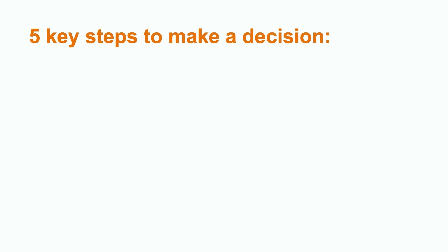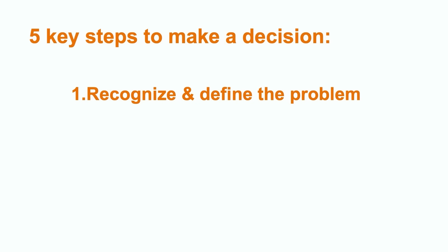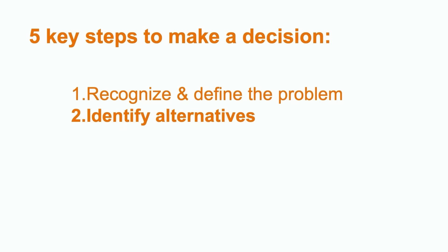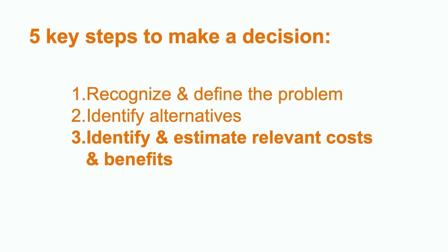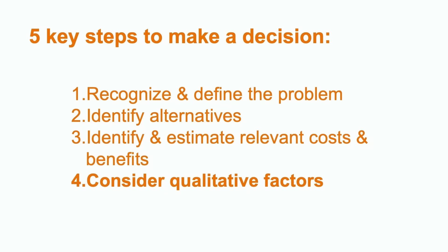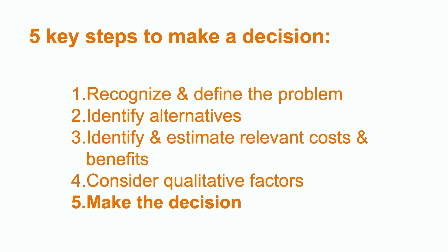We're going to explore a useful short-run decision-making model using a specific example. In this model, there are five key steps to consider before ultimately making a final decision. Step one is to recognize and define the problem. Step two is to identify alternatives. Step three is to identify and estimate relevant costs and benefits. Step four is to consider qualitative factors, and step five is to make the decision.